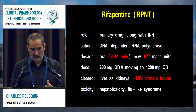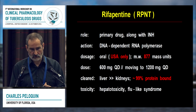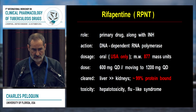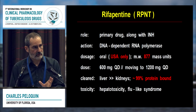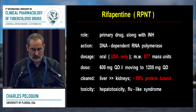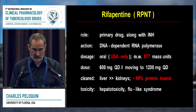Turning to rifapentine — to my knowledge, it's only approved for use in the United States, though that could change with fairly small barriers to overcome. It has a larger molecular weight, and the main distinguishing feature is that it's 99% protein bound. Different methods give anywhere from 89.7 to 99.5%, but 99 is a good summary value. The dose is moving from the initial 600 milligrams to 1,200 milligrams.